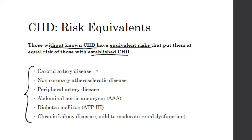When we think about a risk equivalent for CHD, we're looking for evidence of atherosclerotic disease in other organs. For example, if we see disease in the neck, we need to worry about the heart. If we see disease in the periphery — meaning the legs, the gut, the renal system, or other organs — we need to worry about the heart. Anybody with diabetes mellitus or chronic kidney disease is also a risk equivalent for CHD.